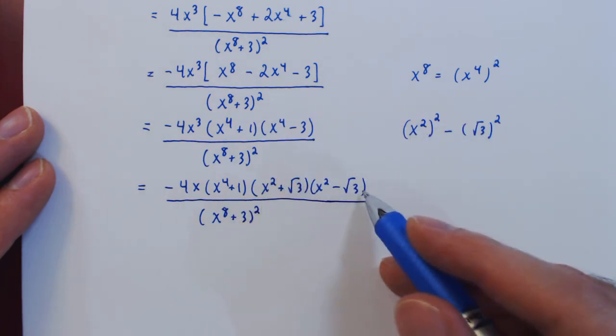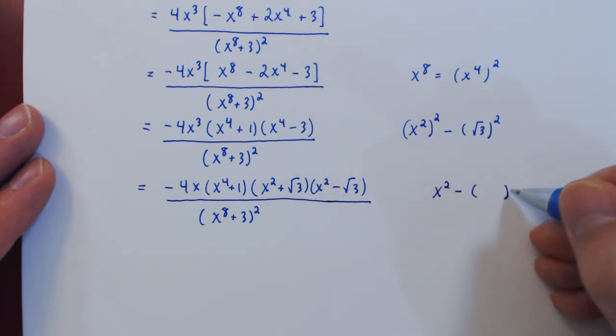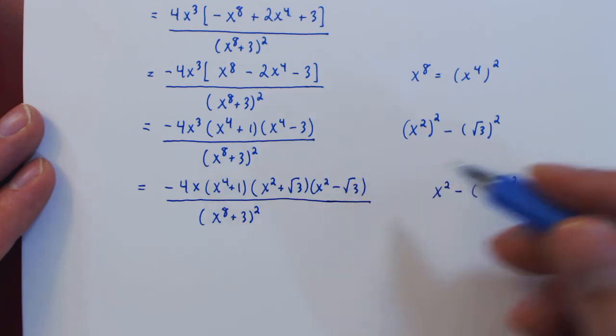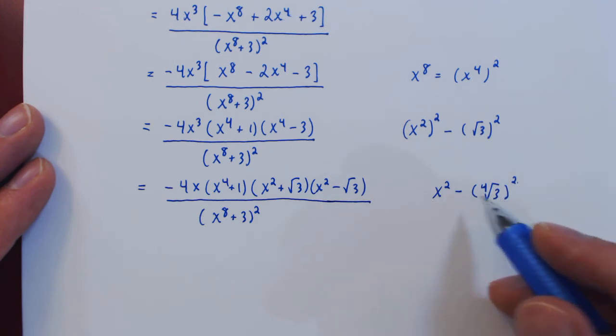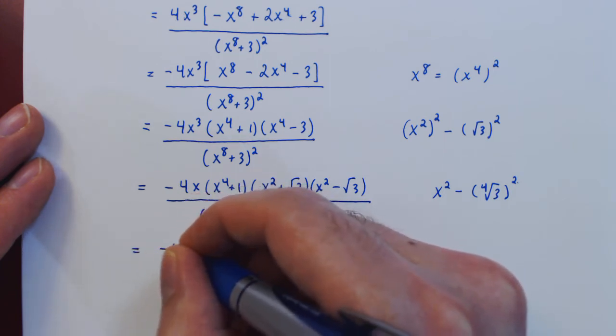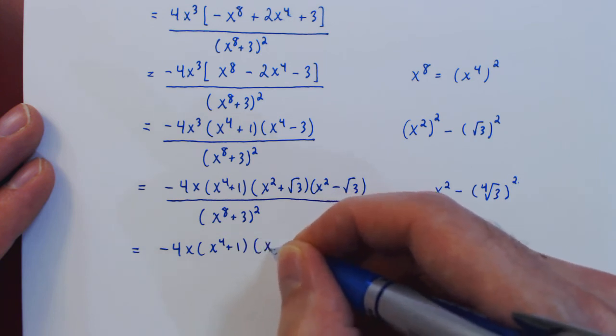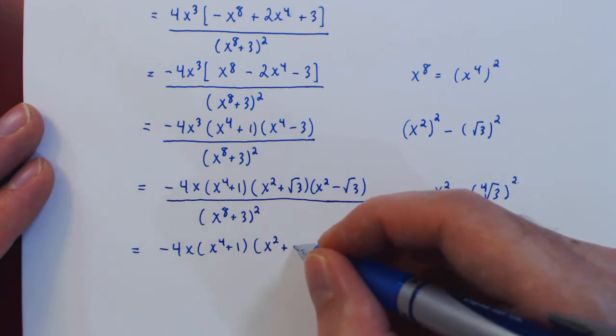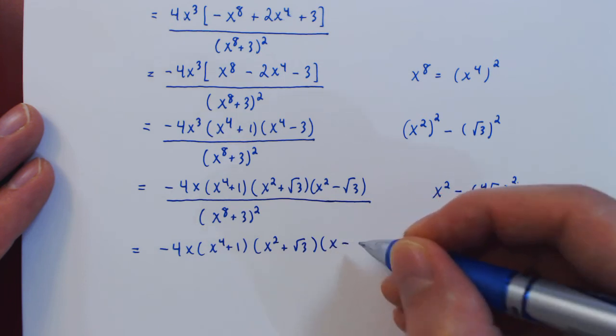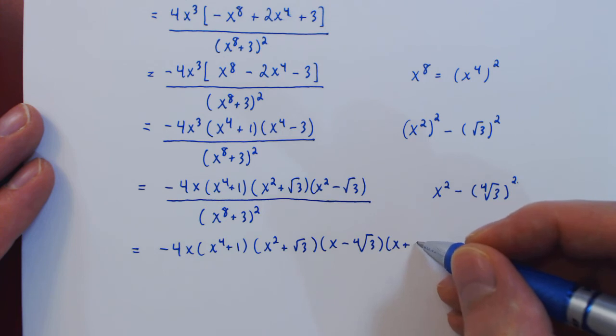So we will have x squared plus square root of 3 times x squared minus square root of 3. And again, we have a difference of squares. If we view square root of 3 as, well, what squared? What do we square to get root of 3? That is, of course, the fourth root of 3. So again, a difference of squares with x and fourth root of 3. So we will have x minus the fourth root of 3 times x plus the fourth root of 3.